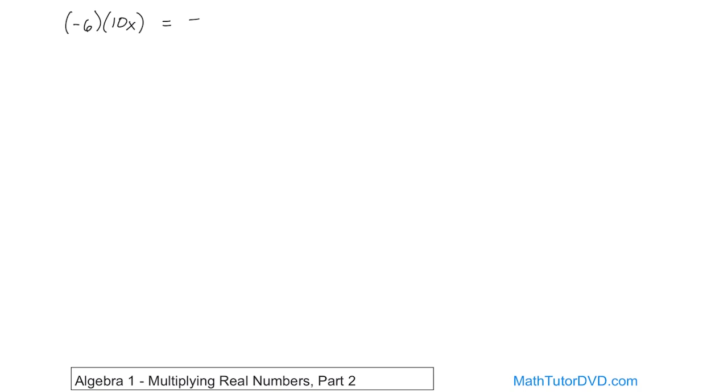And when you multiply things like this, you can't do anything with the x, but you can certainly multiply the numbers together. 6 times 10 is 60. So you get 60. Now don't forget x has to come along for the ride, because he's also being multiplied as well. It's just we don't know what x is, so we can't do anything further. And the answer in this case is negative 60x.